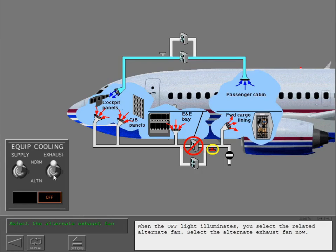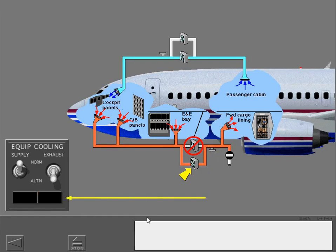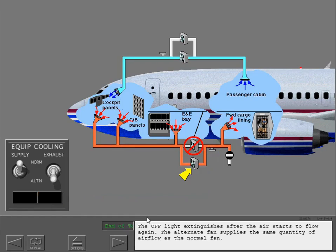Select the alternate exhaust fan now. The off light extinguishes after the air starts to flow again. The alternate fan supplies the same quantity of air flow as the normal fan.